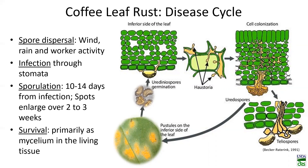Or once you start to see visible spores, you can spray to try to knock out the spore load on the leaf surface. For the pathogen Hemileia vastatrix, survival is primarily through the mycelium in the living tissue. So any protectant fungicide spray at this stage is not going to reach deep within the tissue where the fungus is residing. This is where systemics are going to be very important.